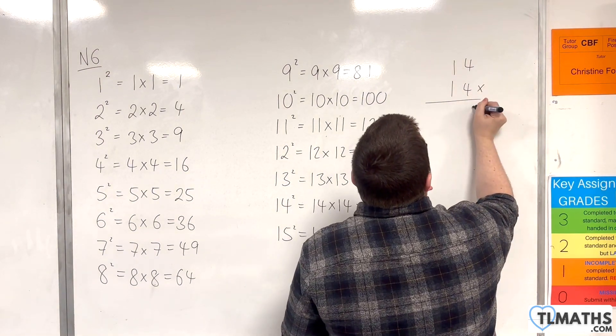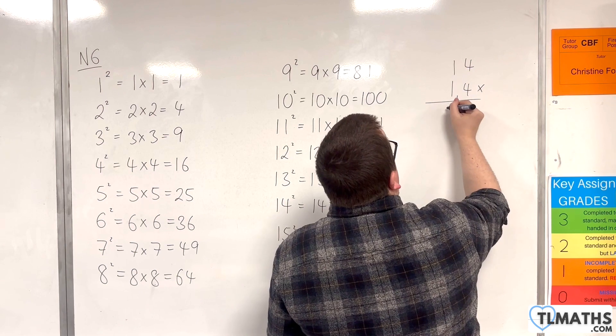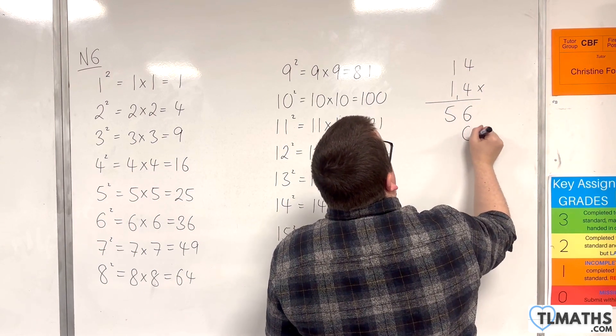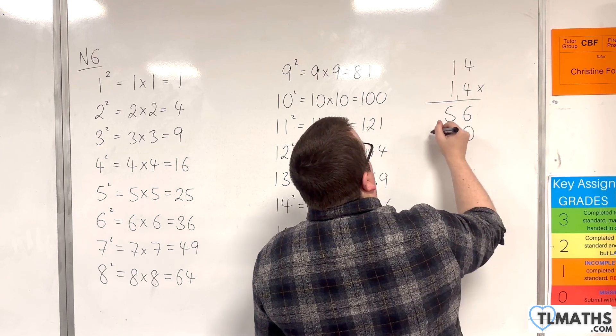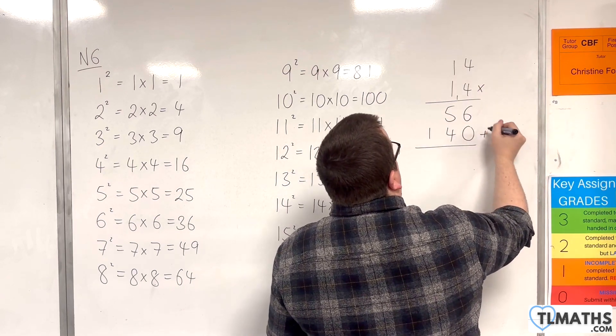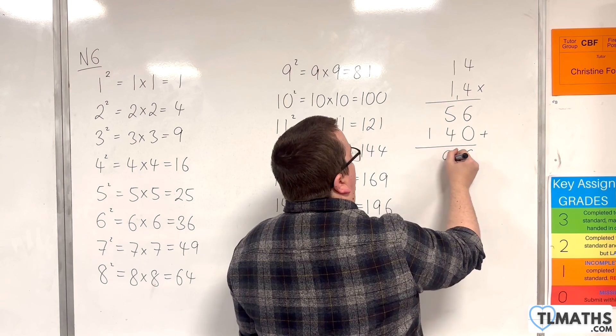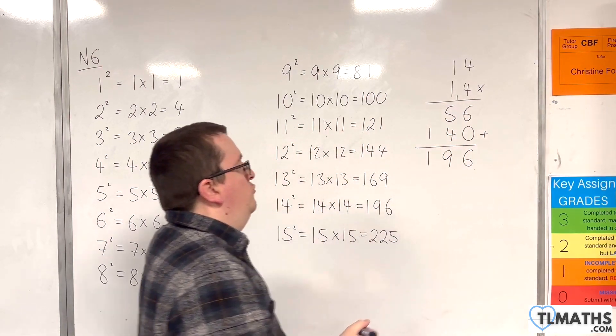So 4 times 4 is 16, 4 times 1 is 4, plus the 1 is 5. Then we go into the next row, so bring in a 0, 1 times 4, 1 times 1. And then add those two results together, so 6 plus 0, 5 plus 4, and the 1, so 196.